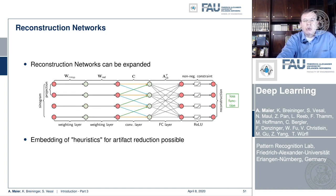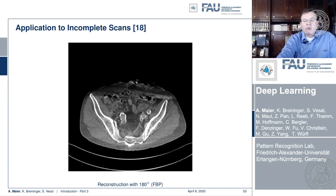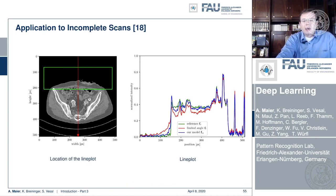We extend this approach to apply it to fan beam projection data. There are cases that cannot be solved, like the limited angle situation. In this image you see a full scan that produces a reasonable CT image. However, if you're missing only 20 degrees of rotation you already see a severe artifact. Now, if you take the idea of converting your reconstruction algorithm into a neural network and retrain it on some training data — here it's only 15 images — you can see that even on unseen patients we are able to recover some of the lost information.